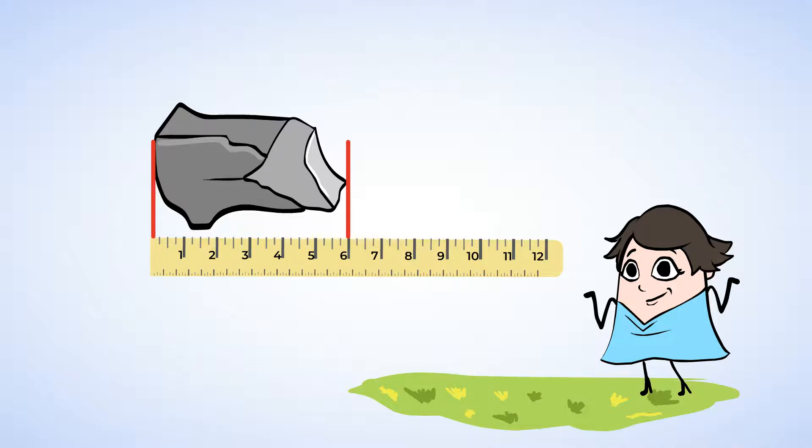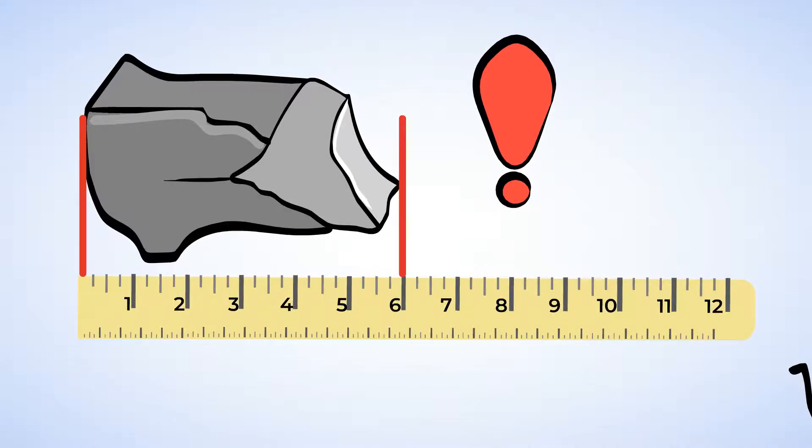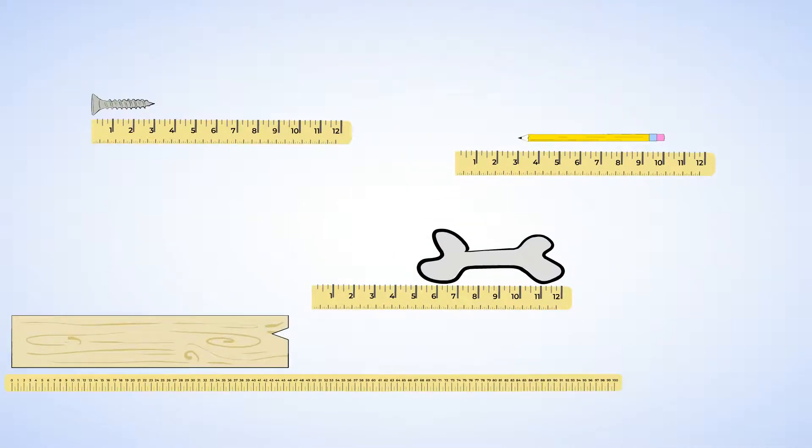We've definitely talked about how important it is to make sure you line up what you're measuring with the ruler correctly. Now let's take a look at some other objects and see if they are ready to be measured. Can you tell me which of these objects are lined up and ready to be measured? Let's look at them one by one.